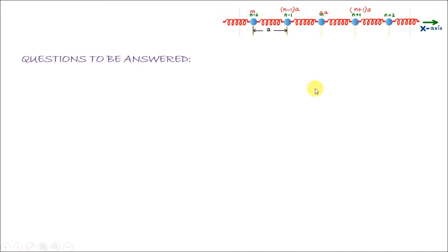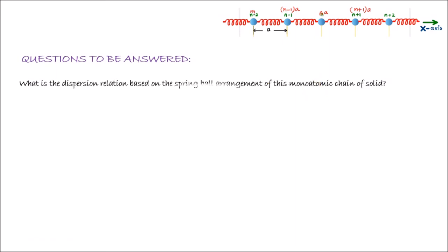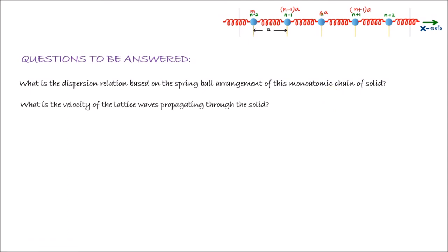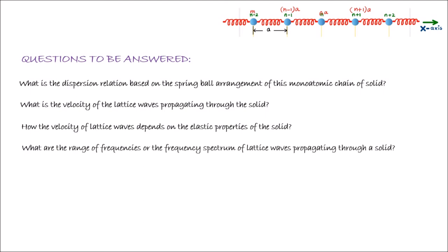The questions that need to be answered are: first, what is the dispersion relation based on this spring-ball arrangement of a monoatomic chain? Second, what is the velocity of the lattice waves propagating through the solid? Third, how does the velocity of the lattice wave depend on the elastic properties of the solid? And what are the range of frequencies or the frequency spectrum of the lattice waves, and how does this range depend on the elastic properties of the solid? Through the subsequent description, we will be able to answer all these questions.